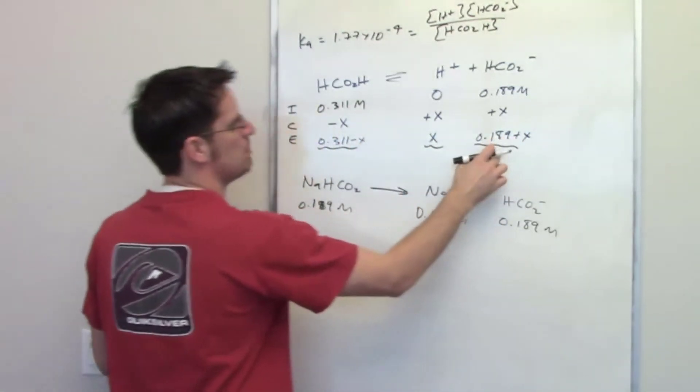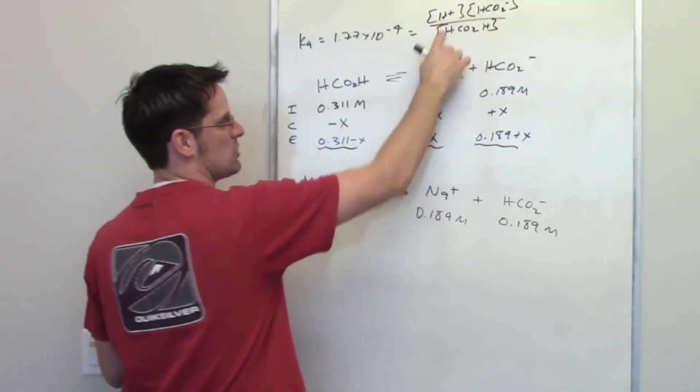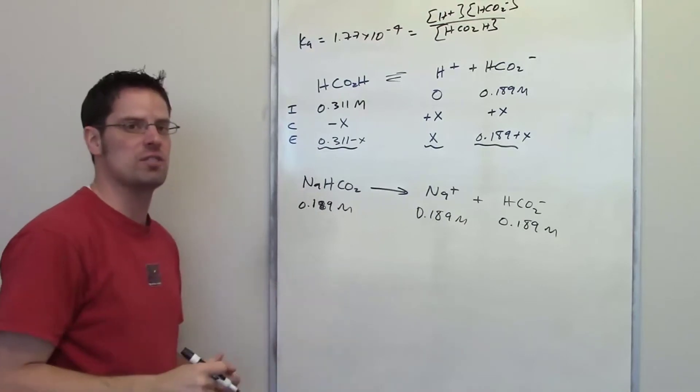So what I have to do is take each of these numbers, or these values, and put them in for their respective terms up here, and then solve for X.